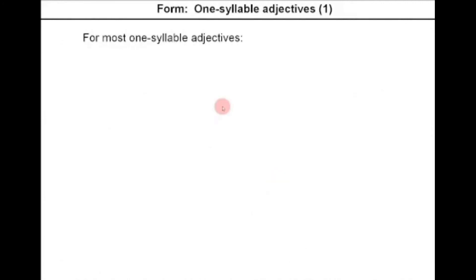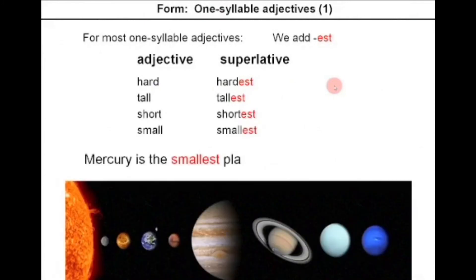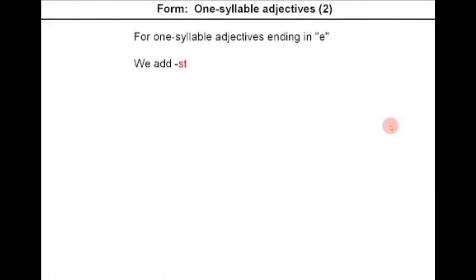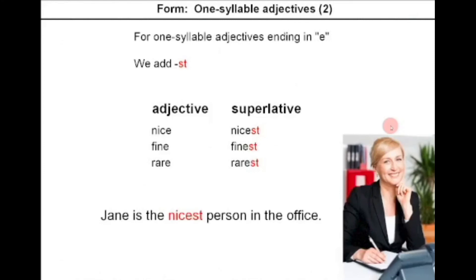Let's look at the form of superlatives. For most one-syllable adjectives, we add EST. For example: hard → hardest, tall → tallest, short → shortest, small → smallest. Example: Mercury is the smallest planet in the solar system. For one-syllable adjectives ending in E, we add ST. For example: nice → nicest, fine → finest, rare → rarest. Example: Jane is the nicest person in the office.